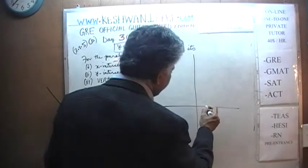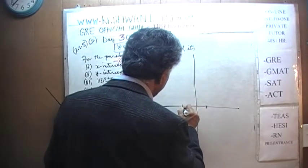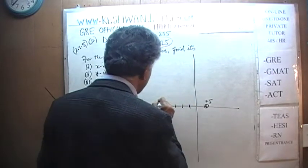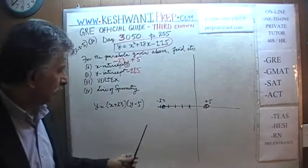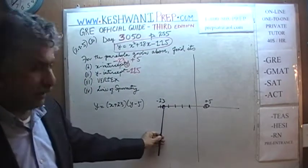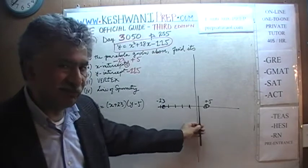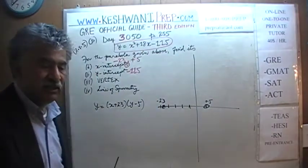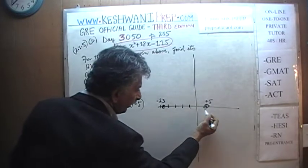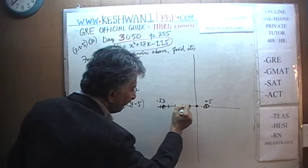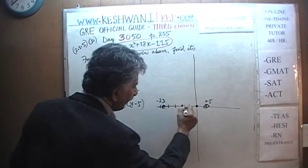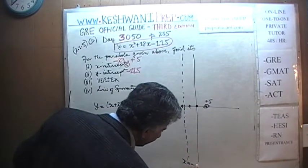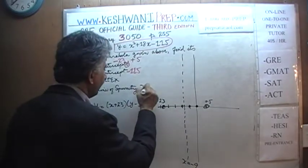We have x-intercepts at −23 and +5. The distance from −23 to +5 is 28 units. Half of 28 is 14, so we go 14 units from either intercept to find the midpoint. Starting from +5: going 5, then 10, then 14 units left puts us at x = −9. This is our line of symmetry: x = −9. The line of symmetry is also the x-coordinate of the vertex.